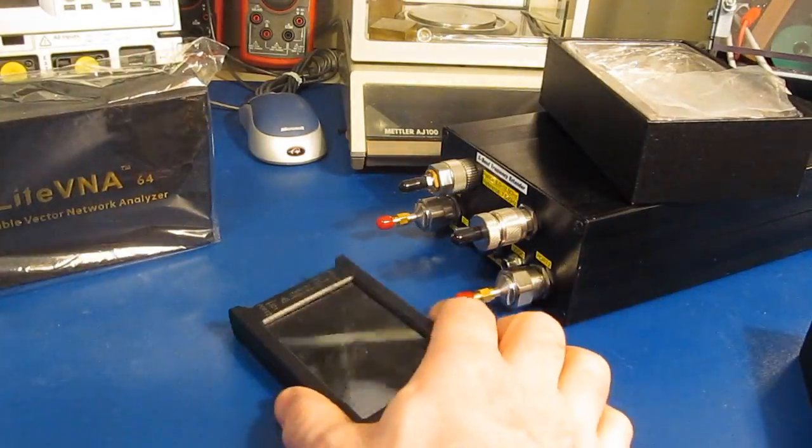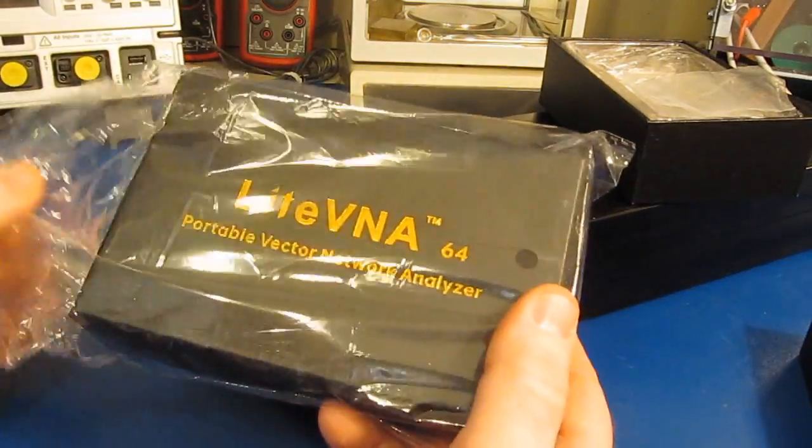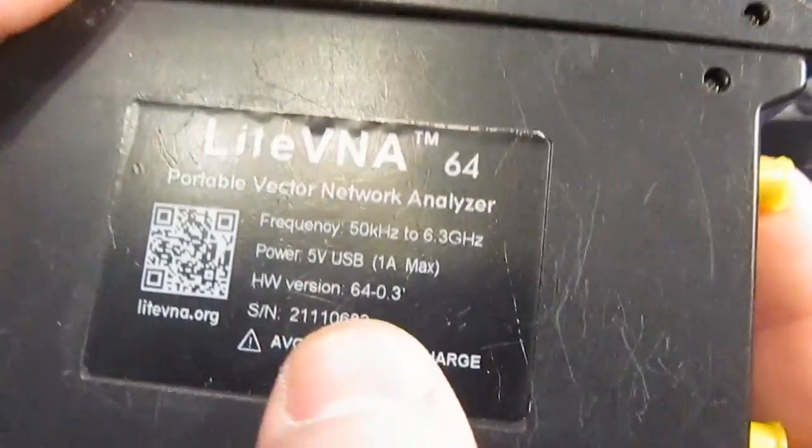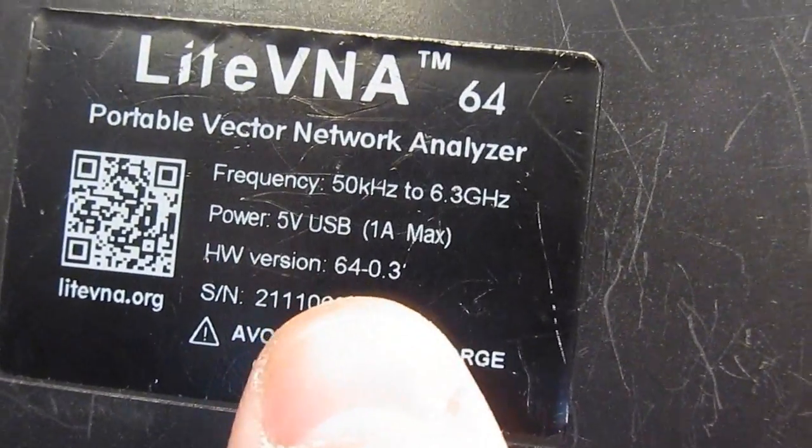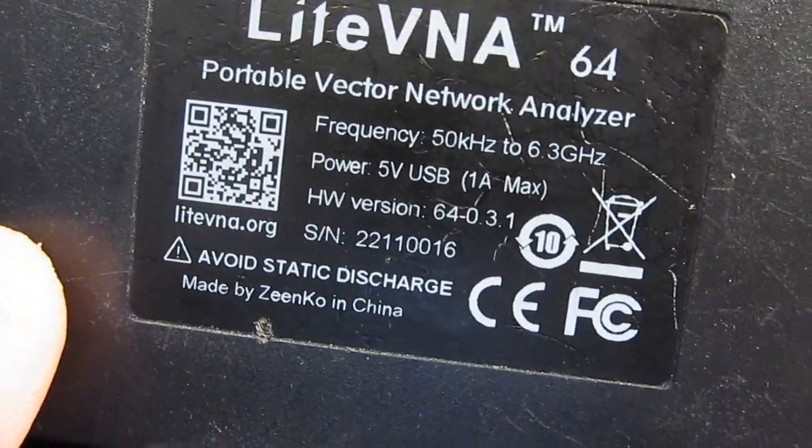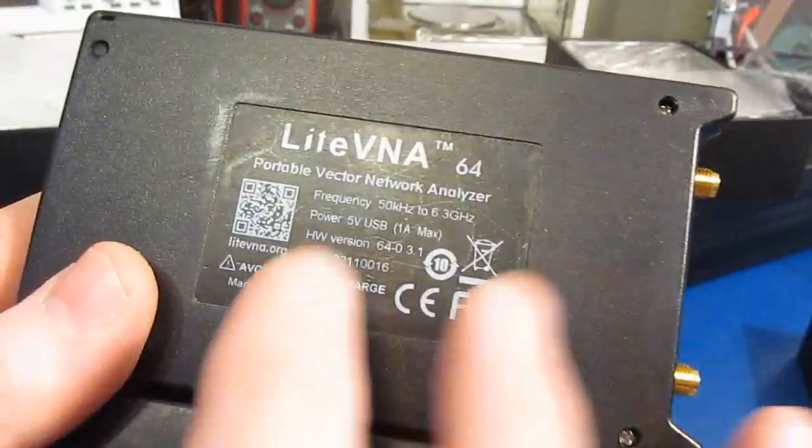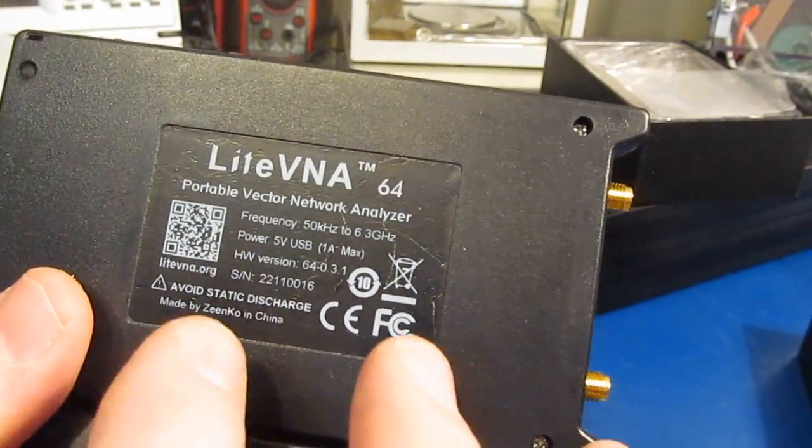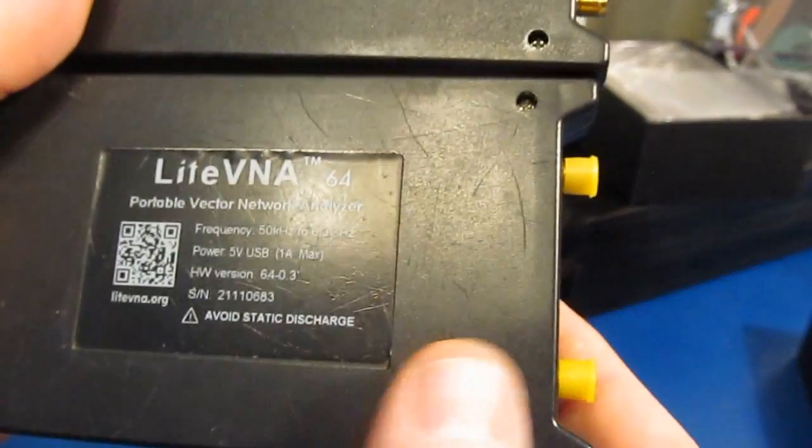So this unit here I don't think I've ever had this apart. This is my original Light VNA 64 and we can see this is 64-0.3 versus 64-0.3.1. The big difference between these two: this new one has about a 5 dB lower noise floor than what the original one does.